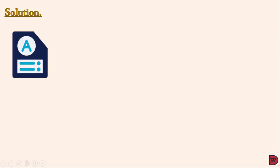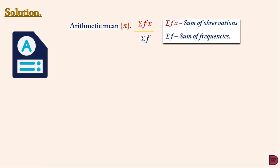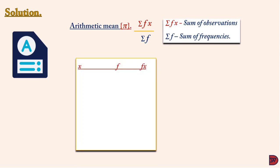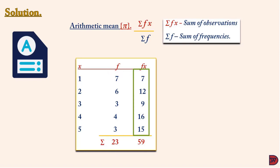For the solution, we start with arithmetic mean: sum of the observations divided by the sum of the frequency. Let x represent the values, f represent the frequency, and fx represent the total frequency. For one order each in seven hours: fx = 7. For two orders in six hours: fx = 12. For three orders in three hours: fx = 9. For four orders in four hours: fx = 16. For five orders in three hours: fx = 15. The sum of frequencies is 23; the sum of total frequency fx is 59.